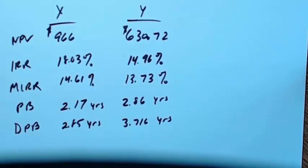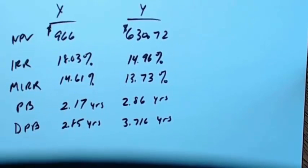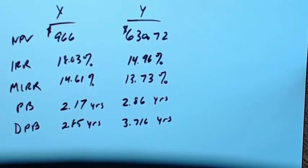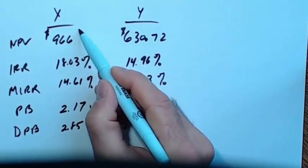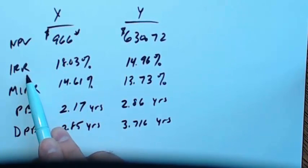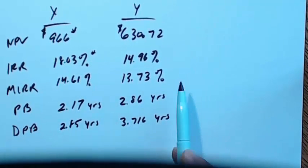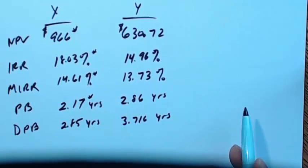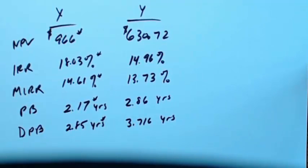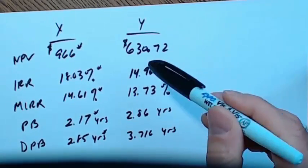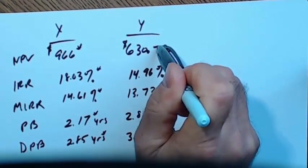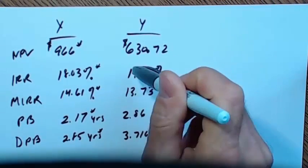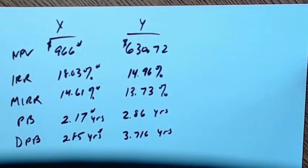Part C asks: what if these projects are mutually exclusive — which one do we pick? You pick the one with the highest NPV: winner is X. Highest IRR: winner is X. Highest MIRR: winner is X. Lowest payback period: winner is X. Lowest discounted payback: winner is X. It's unanimous — X is the project to invest in if you have to pick one or the other. For example, if X is a conveyor belt system and Y is a forklift system, you'd pick the conveyor belt.